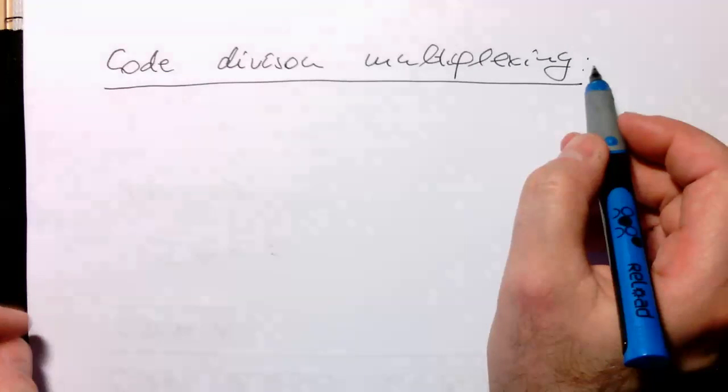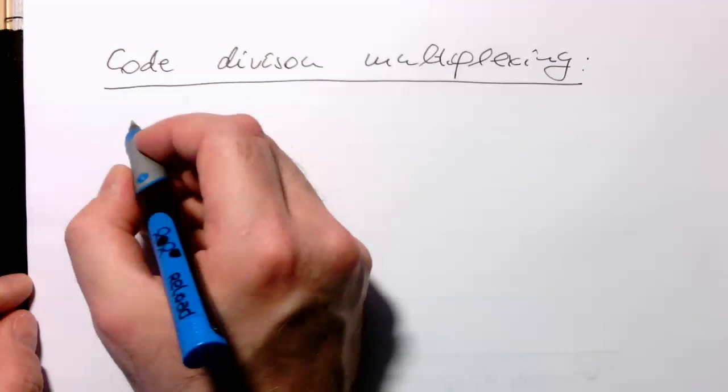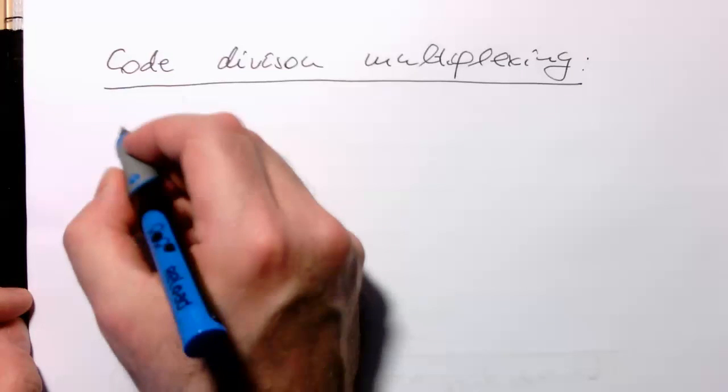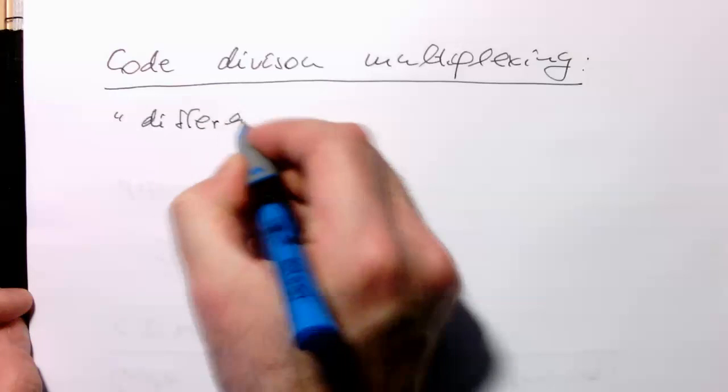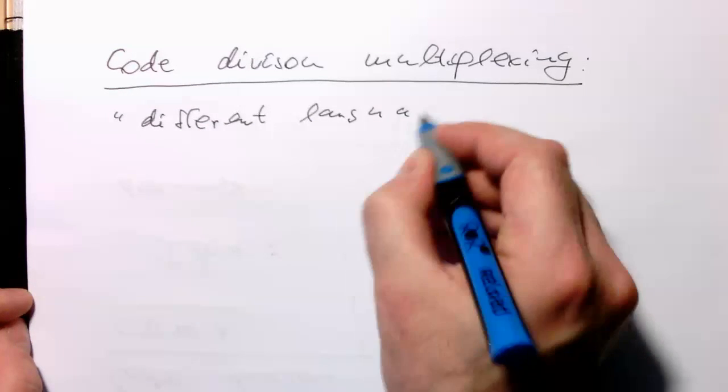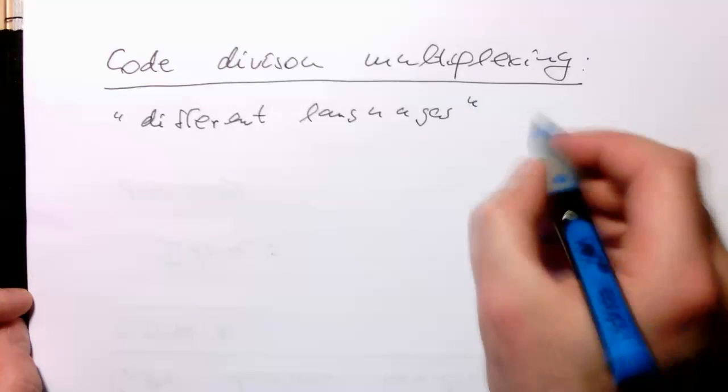So the code division multiplexing, one could say that different transmitters speak in different languages. Different languages spoken at the same time.